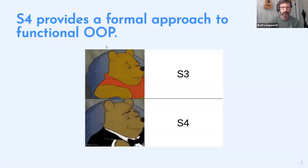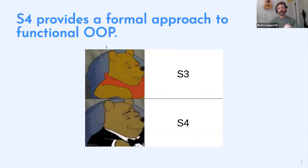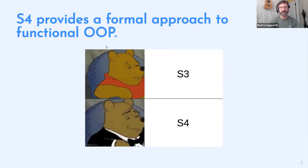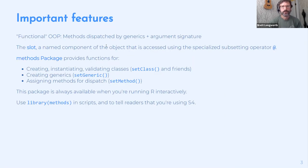S4 provides a formal approach to functional OOP. S4 and S3 are both functional OOP approaches where you define classes that contain and store data, then link those classes to methods through generics. S4 organizes this more than S3 does — methods are dispatched by generics and the signature or class of the arguments.